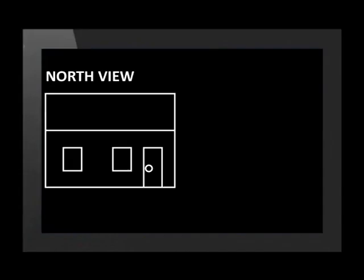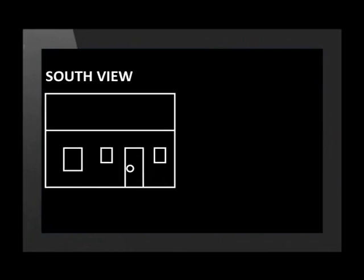Let's take this floor plan of the house and use it to draw the north, south and west view of the house. The north view or elevation of the house shows the front door, the living room window and the second bedroom window. The south view or elevation of the house shows the kitchen door, the bathroom window and the first bedroom window.